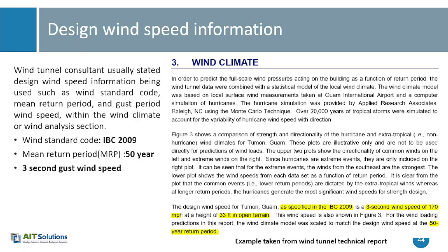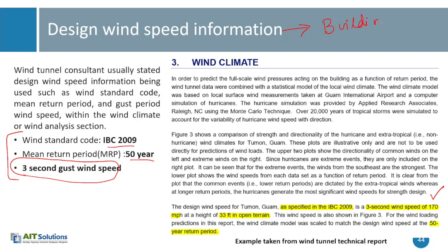The design wind information is mostly available from consultants and is also prescribed in building codes. For example, one example set of information about design wind speed is here: if you go for IBC 2009 building code, it prescribes the mean return period of 50 years and defines the design wind speed as the 3-second gust wind speed at 170 miles per hour. The design wind speed mostly comes from building codes, or if you have a site-specific wind hazard analysis, it can come from that source also.